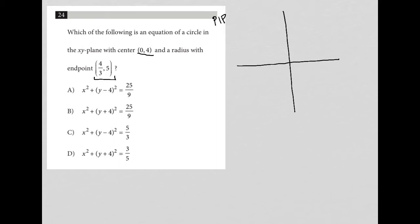So what do I know? I know that I have a center of my circle at (0, 4). So 1, 2, 3, 4—some good spacing there. So there's my (0, 4). And then I have an endpoint of the circle at (4/3, 5). So that's 1, that's 2. So I'm going to say 4/3 is about there, and therefore, 5 would be pretty much at the top of my screen there. So there would be my (4/3, 5).